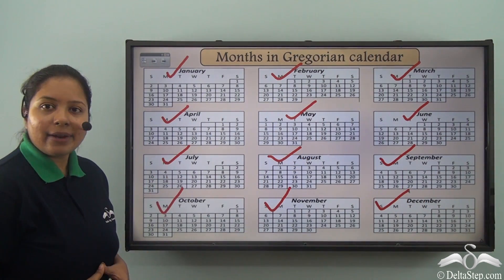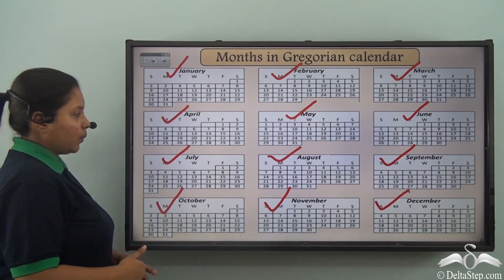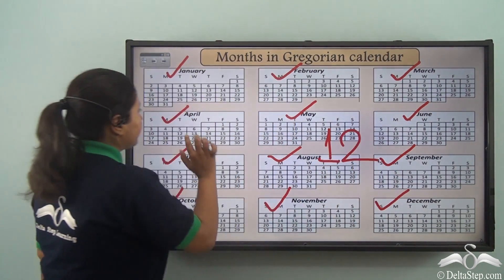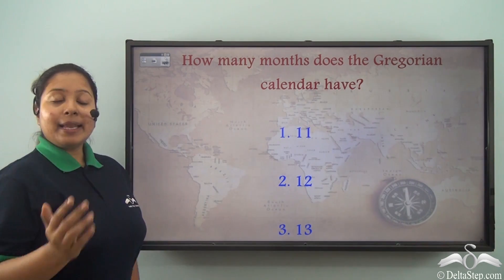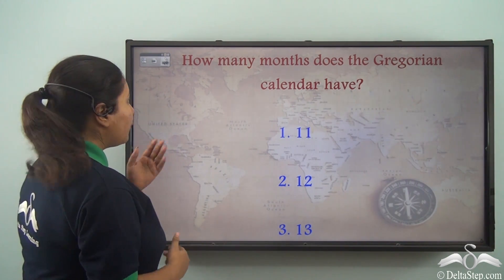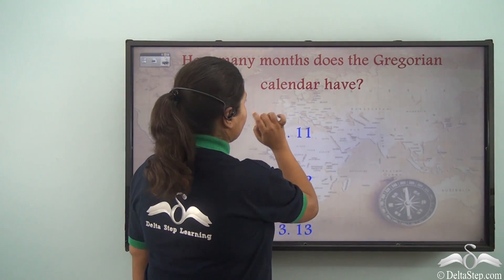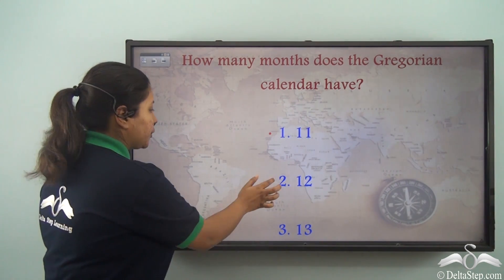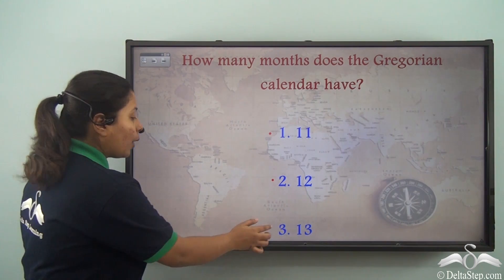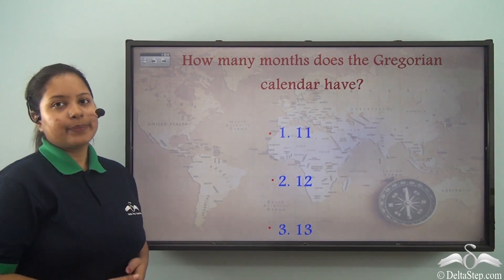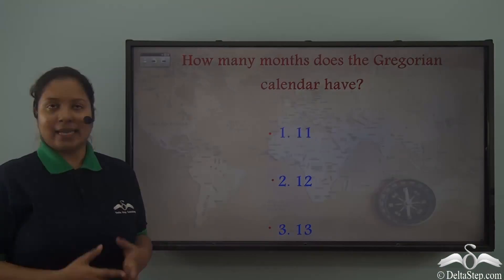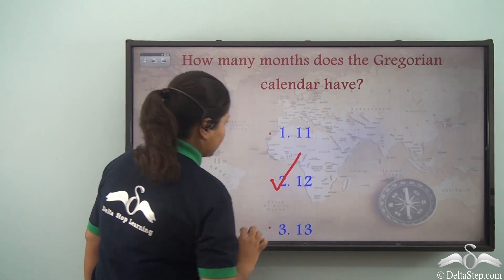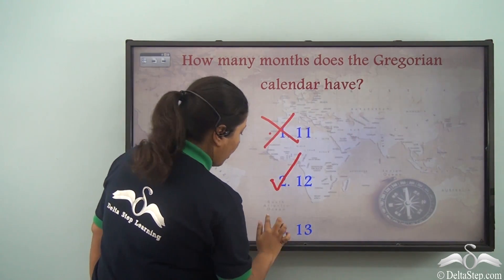So how many months are there in the Gregorian calendar? There were 12 months. Let me ask you a question: how many months does the Gregorian calendar have? Is it option 1, 11; option 2, 12; or option 3, 13? The Gregorian calendar has 12 months, not 11 or 13.